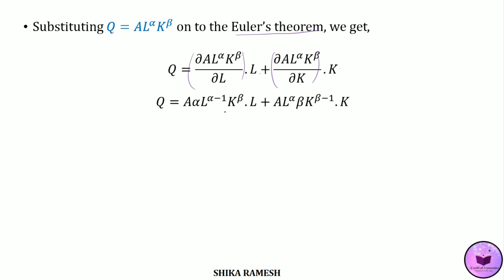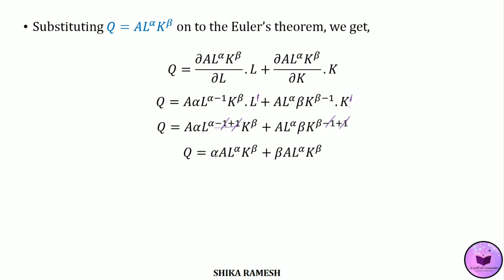Differentiating with respect to L and K, we get A·α·L^(α−1)·K^β·L + A·L^α·β·K^(β−1)·K. Solving, the exponents give L^(α−1+1) and K^(β−1+1), where −1 and +1 cancel, yielding Q = α·AL^α K^β + β·AL^α K^β. This simplifies to Q = (α+β)·AL^α K^β. Since AL^α K^β is Q itself, this gives Q = (α+β)·Q.